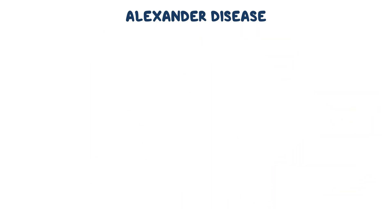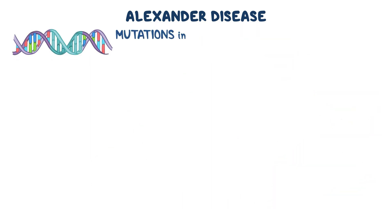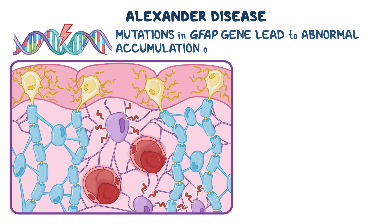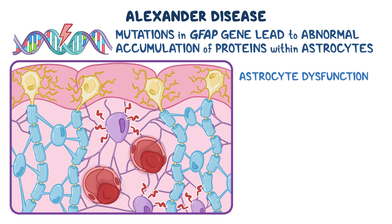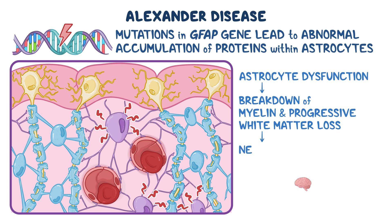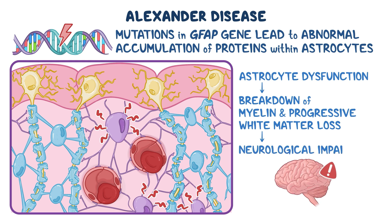In Alexander disease, mutations in the GFAP gene lead to abnormal accumulation of proteins within astrocytes, disrupting their function. Astrocyte dysfunction triggers the breakdown of myelin and progressive white matter loss, resulting in neurological impairment.